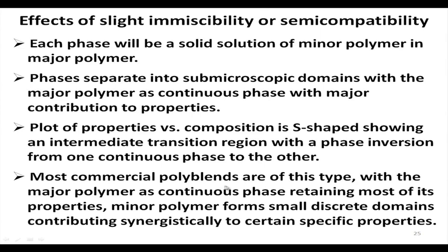This phase inversion — where the dispersed phase becomes the continuous phase and the continuous phase becomes the dispersed phase — is found in semi-compatible blends. Most commercial polyblends are of this type, with the major polymer as continuous phase retaining most of its properties, and the minor polymer forming small discrete domains contributing synergistically to certain specific properties.